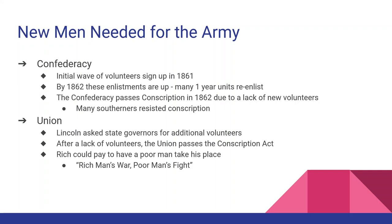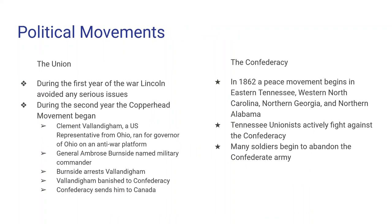By 1862, new recruits are needed for both armies, and both sides pass conscription — basically forced enlistment. One exception in the North: if you had enough money to pay someone to take your place, you could. This made the Union war effort known as a rich man's war and a poor man's fight, with more of the lower class doing the fighting. There are peace movements too — in the mountainous areas of Georgia, Kentucky, Tennessee, North Carolina, South Carolina, and Alabama, people turn against the Confederacy, and in Tennessee soldiers are even raised to fight for the Union.